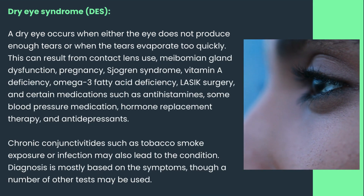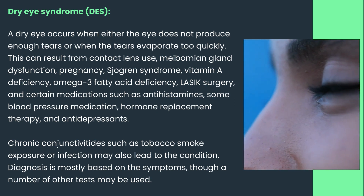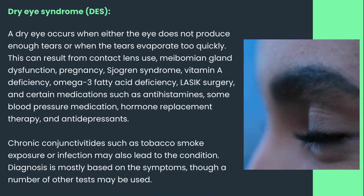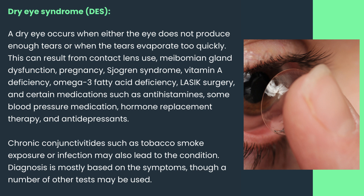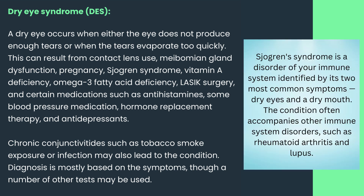A dry eye occurs when either the eye does not produce enough tears or when the tears evaporate too quickly. This can result from contact lens use, meibomian gland dysfunction, pregnancy, or Sjögren's syndrome. Sjögren's syndrome is a disorder of the immune system, and the condition often accompanies other immune system disorders such as rheumatoid arthritis and lupus.